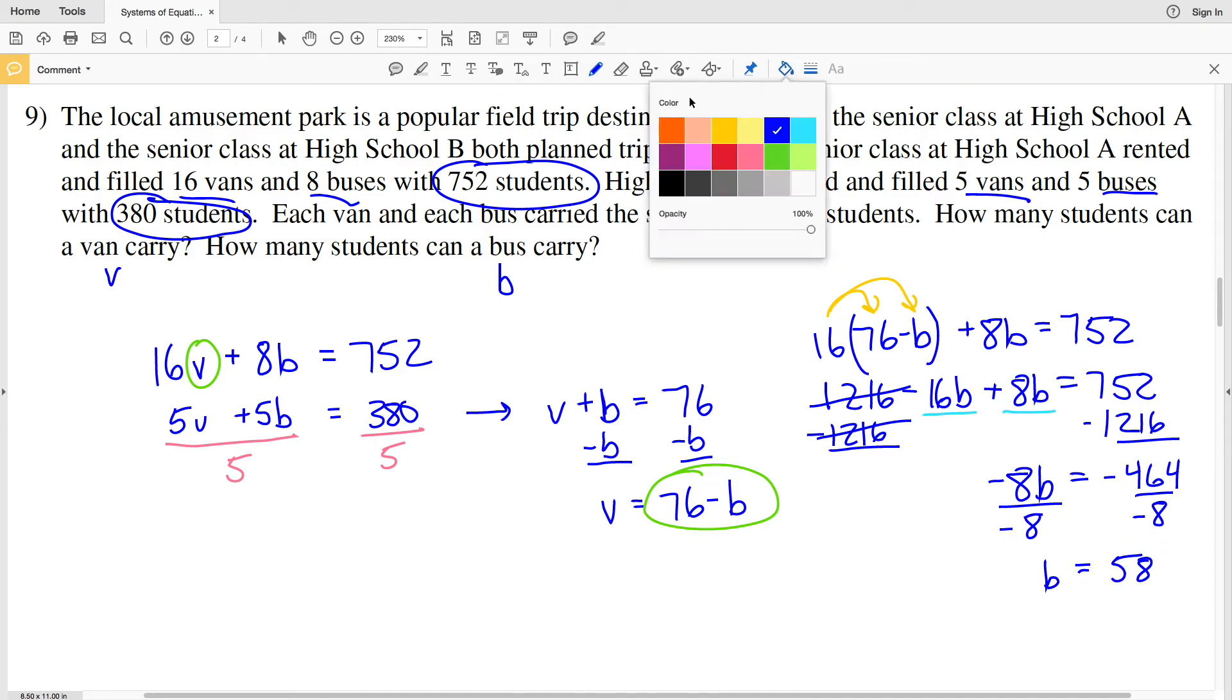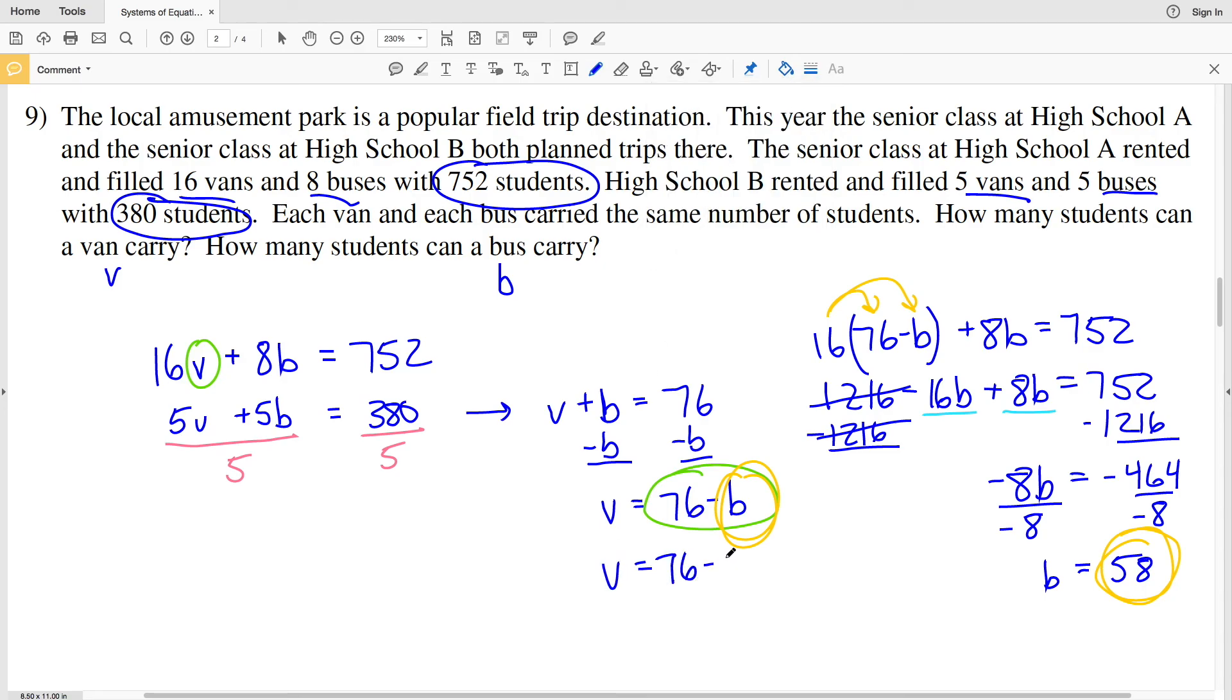So if I know that B is 58, I can take that value of B and plug it in to any of my equations, and let's use the equation that I already said equal to V. So I'll get that V equals 76 minus 58, because B is 58, and 76 minus 58 is equal to 18. So we have that a van can carry 18 students and a bus can carry 58 students. And that's our solution in number 9, which is the final solution in this video.